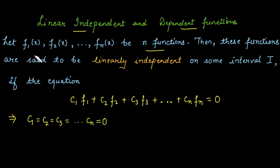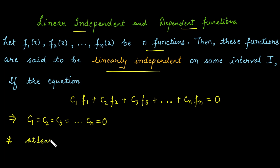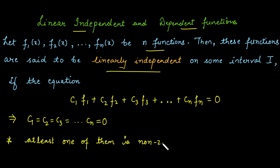In that case we call the functions linearly independent. If not all constants are zero — that is, at least one of them is nonzero — then we call the functions linearly dependent.